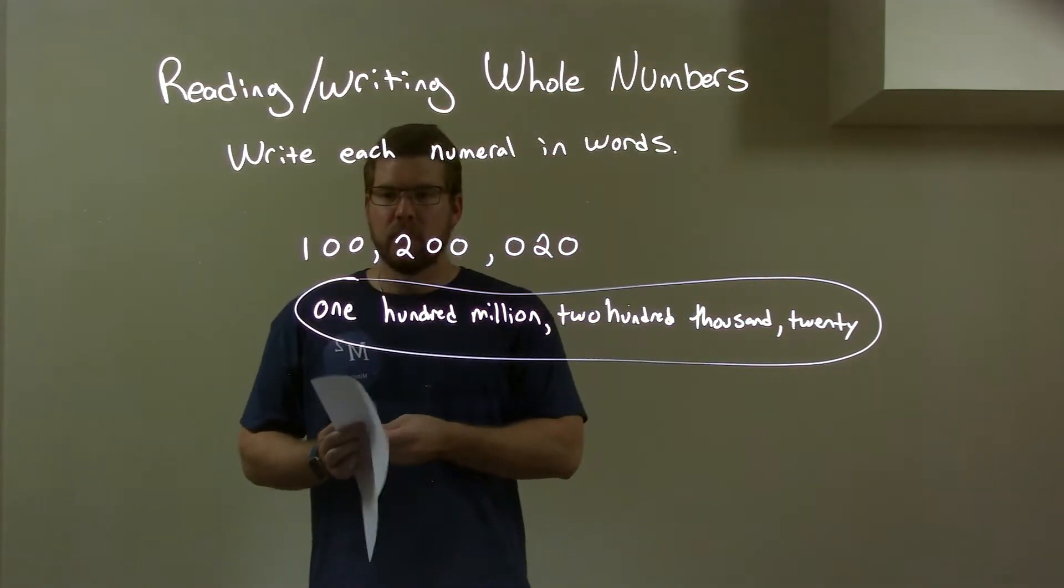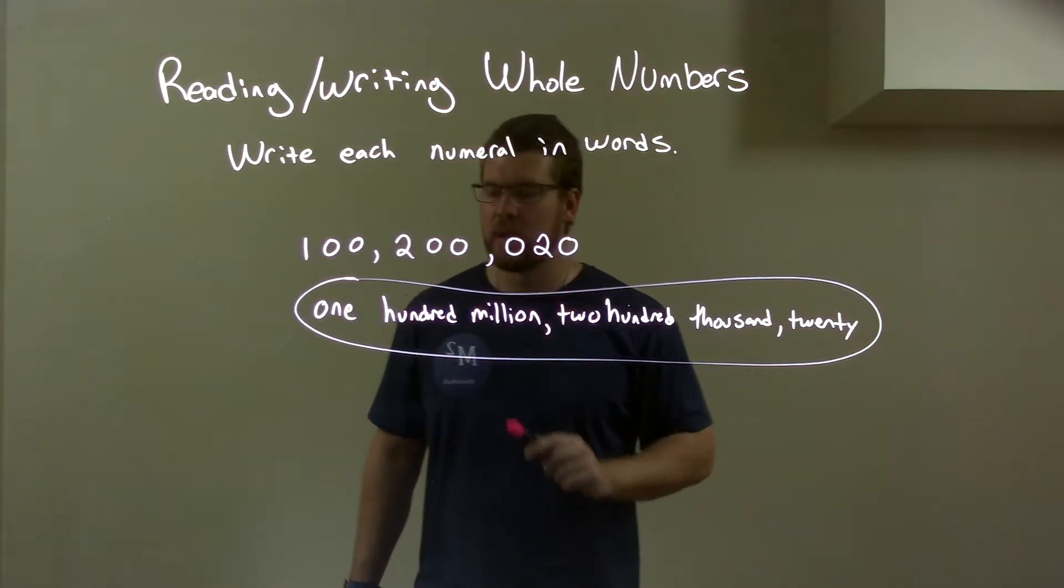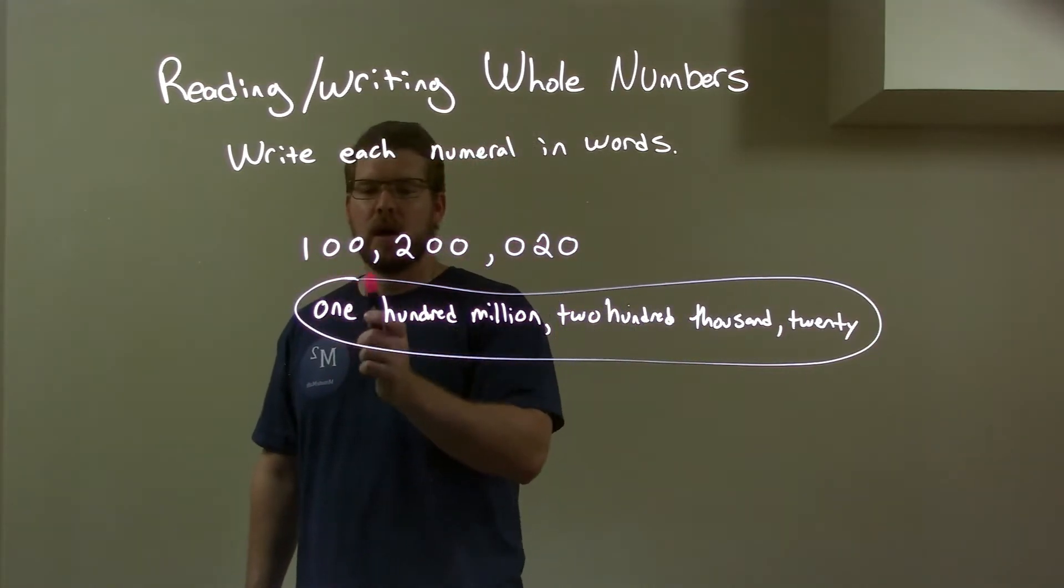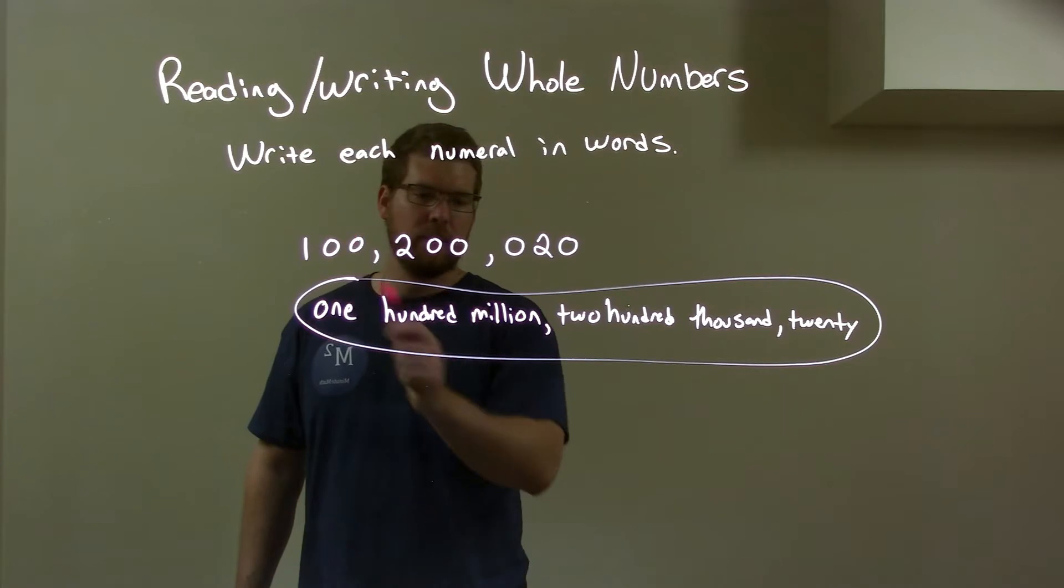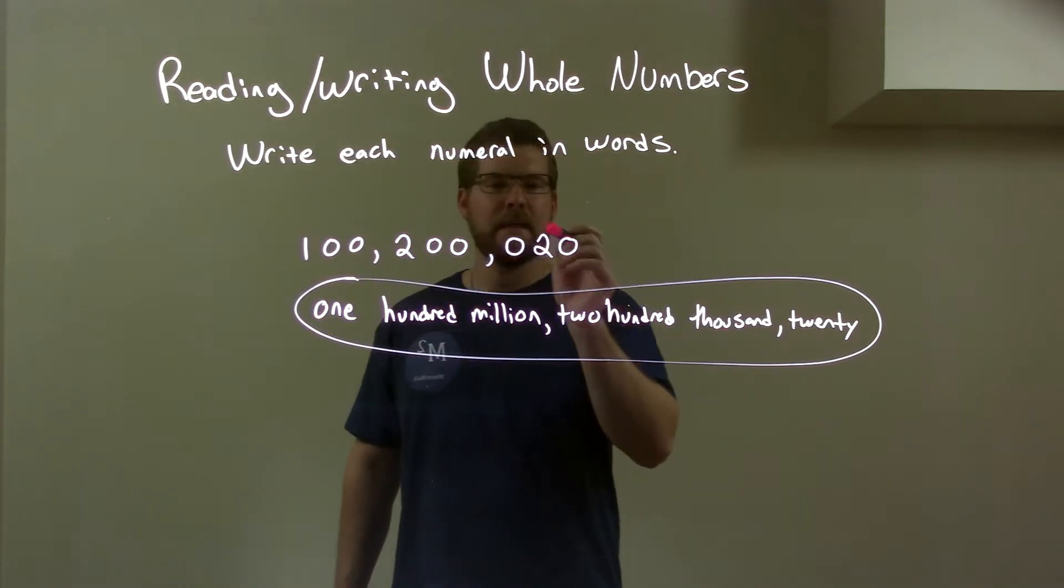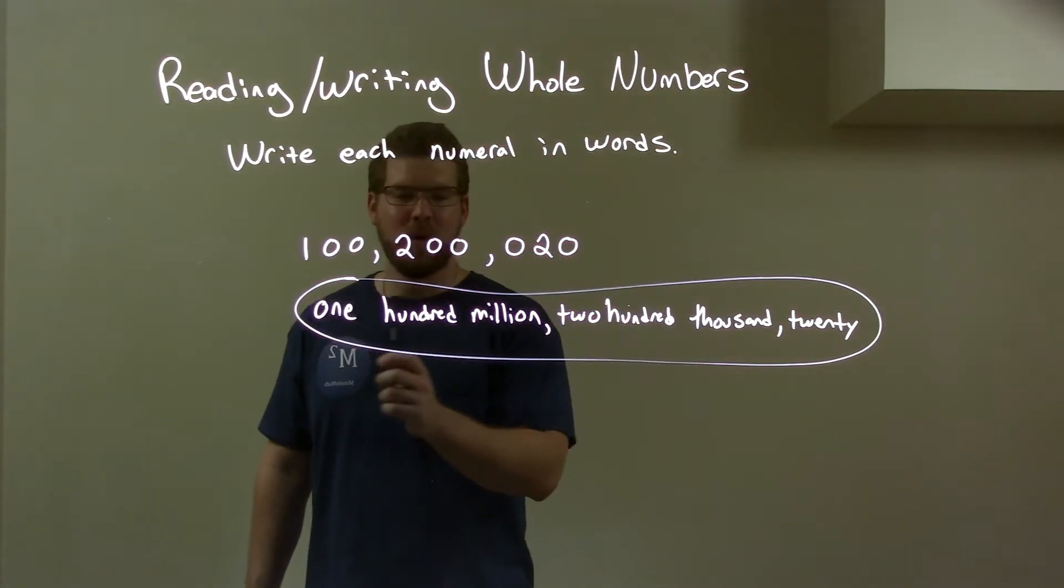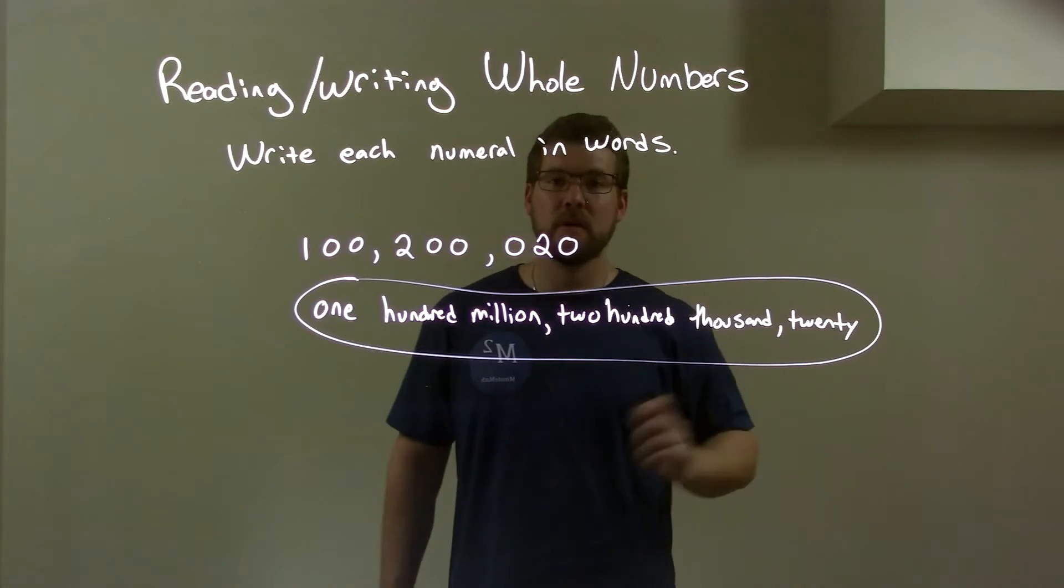So, quick recap. We're given 100,200,020. First part here, we have 100. And that's in the millions. So, 100 million. Then here, we have 200 in the middle. And that's in the thousands. So, 200 thousand. And lastly, we just have 20. So, again, our final answer: 100 million, 200 thousand, 20.